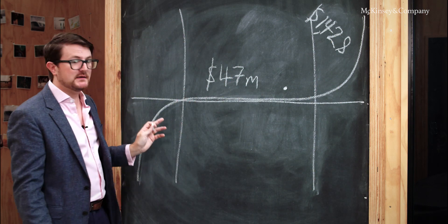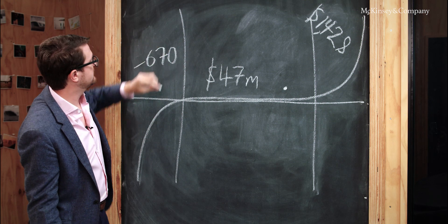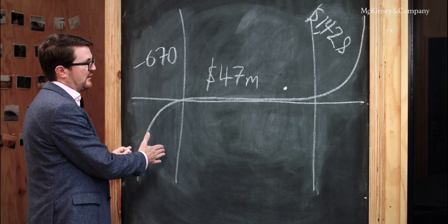Oppositely, at the bottom end, companies are making an average of minus 670 million a year economic profit. So there's these kind of deep losses in the bottom.